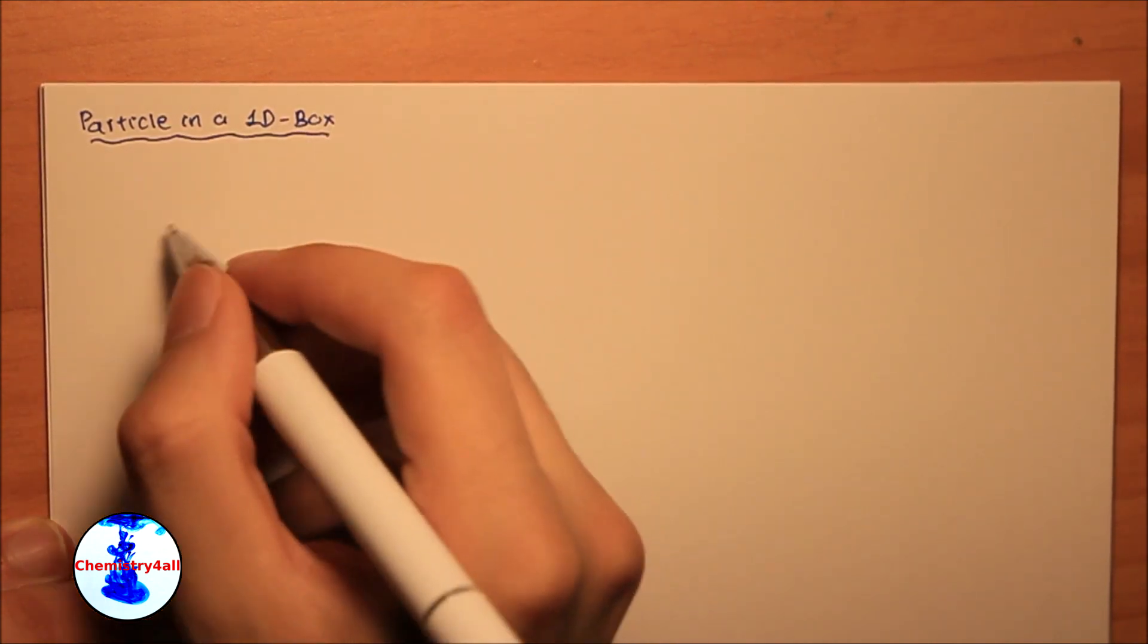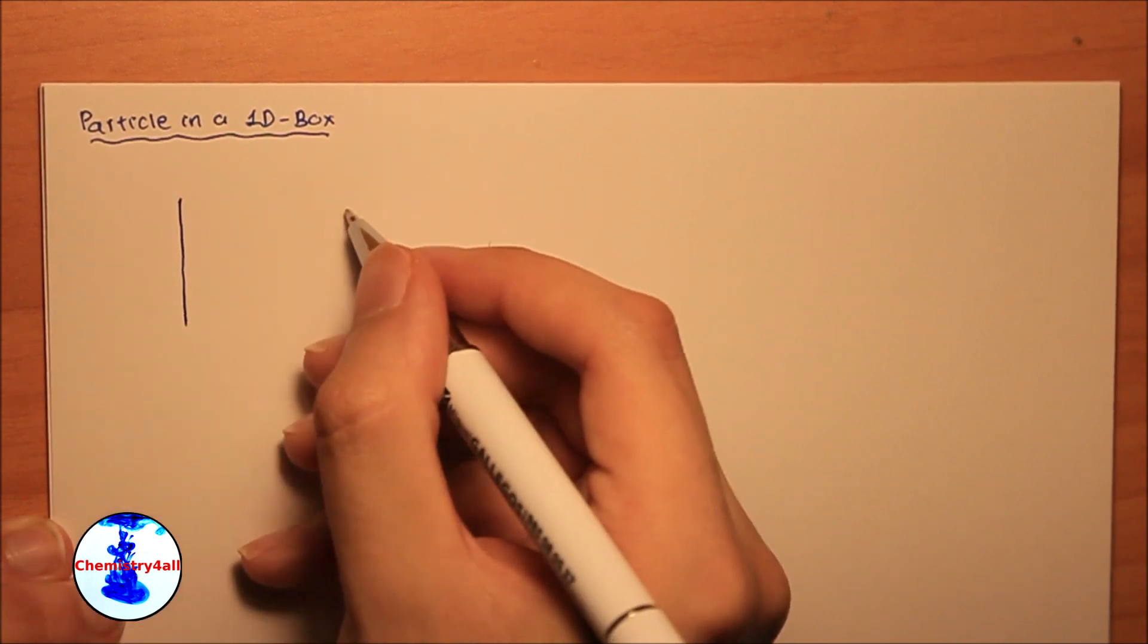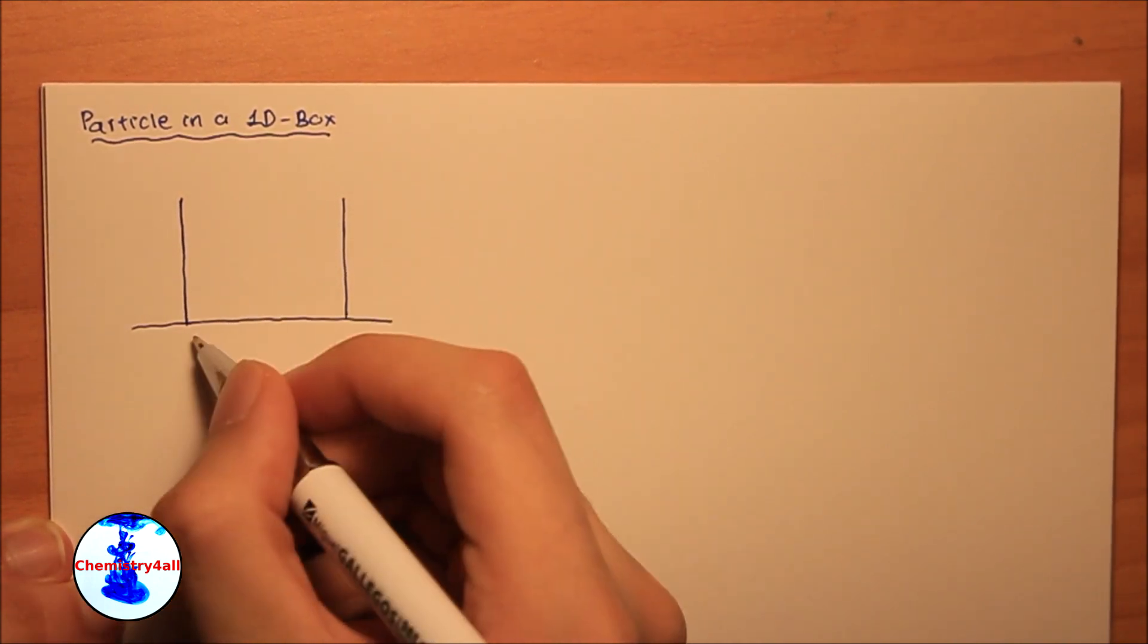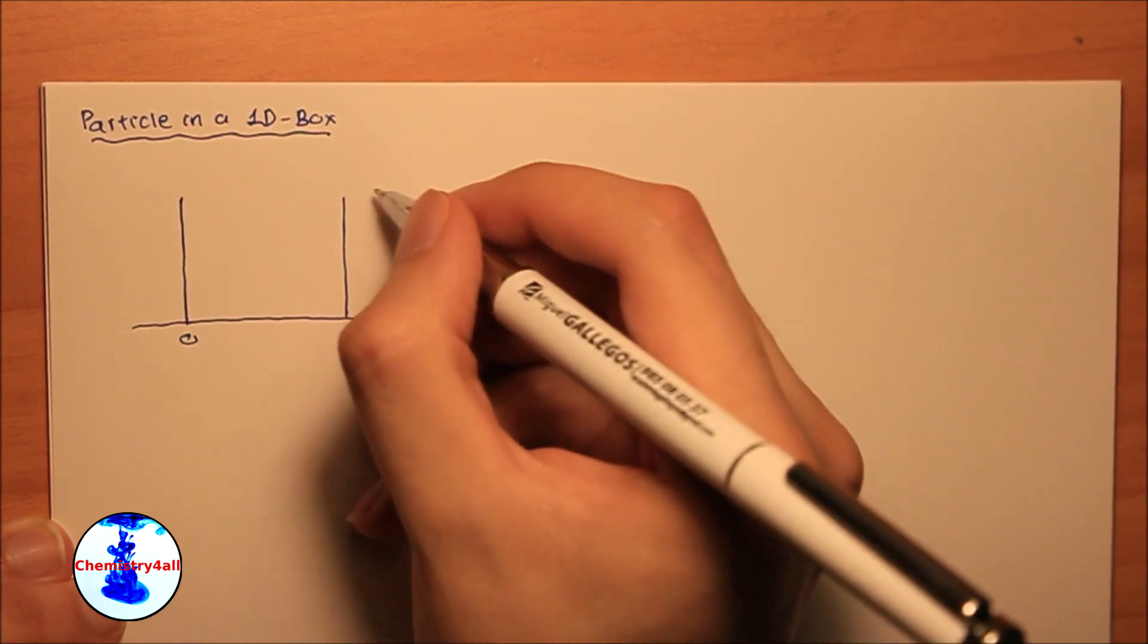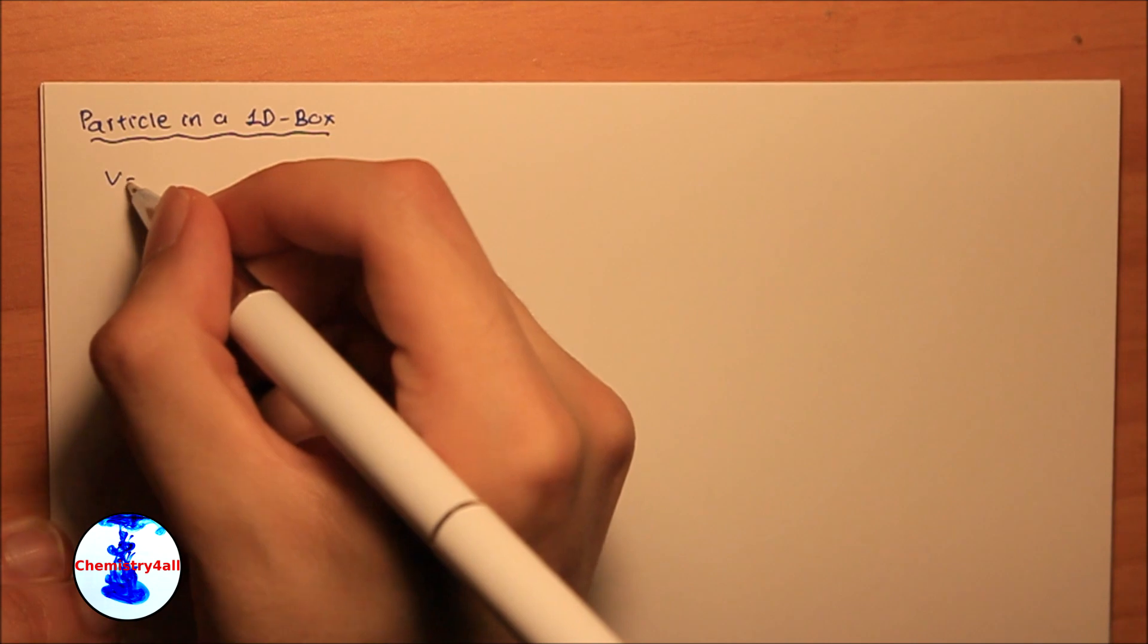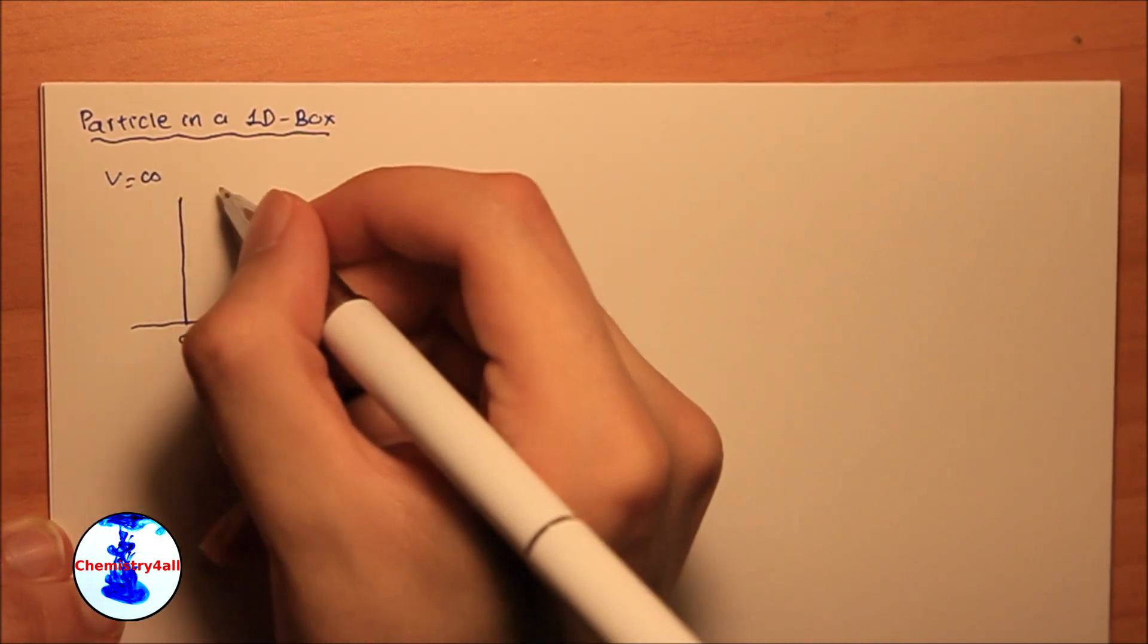Let's assume that we have a unidimensional potential box of a given length L. Now we will assume that the potential anywhere outside the box is infinite, whereas on the other hand inside the box we have a constant potential.